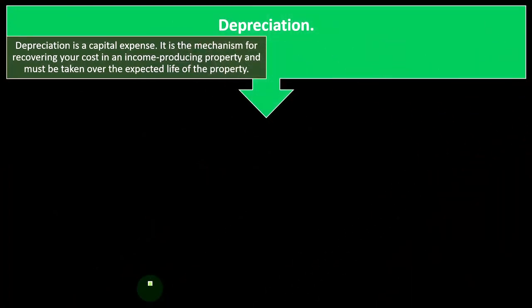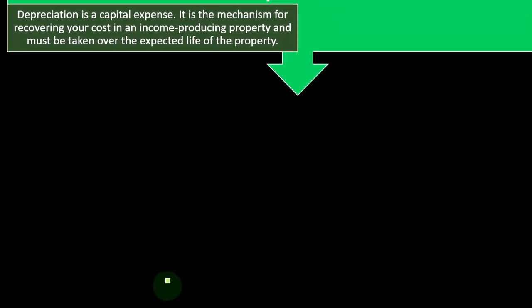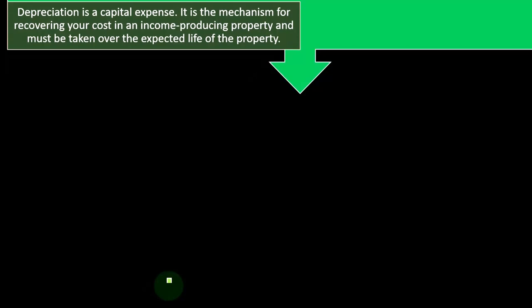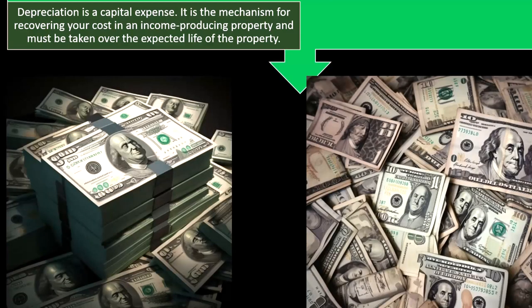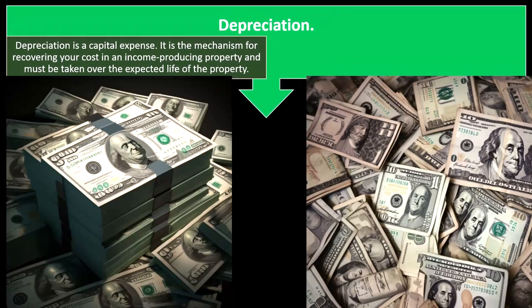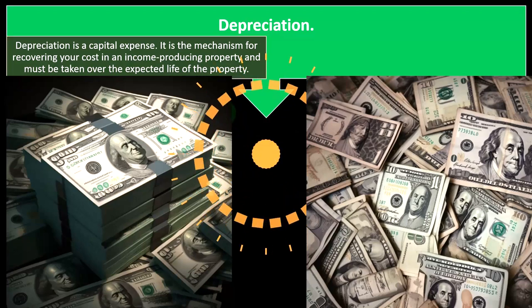You then depreciate the asset over its useful life, which is where you see it on the Schedule E — allocating the cost over the useful life. There may also be concepts like Section 179 deductions and special depreciation. With rental property, the property itself becomes a huge cost, and being able to allocate that cost over time is quite important. Rental property is a bit more confusing than other assets because real estate might go up in value.